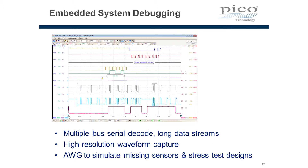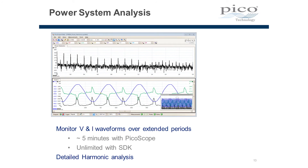12 bits resolution is high resolution to enable us to look at those outputs from the sensors that are so challenging. The built-in arbitrary waveform generator enables us to simulate missing sensors and to add noise and jitter to our designs to stress test the design, making sure that it works even in the presence of corrupted signals. 12 bits resolution is ideal for detailed power analysis — you can monitor voltage and current waveforms over extended periods with the deep buffer memory. With the Picoscope application we can measure about 5 minutes of activity, and with the software development kit it's limited only by the size of the hard disk.